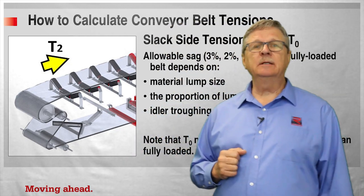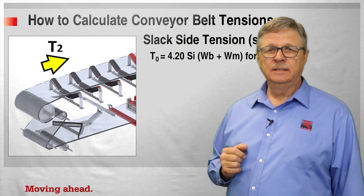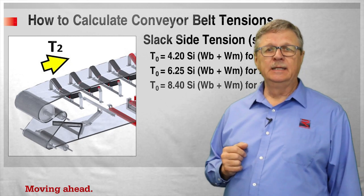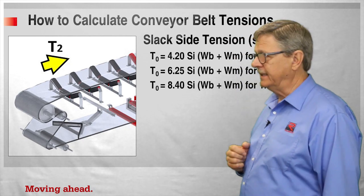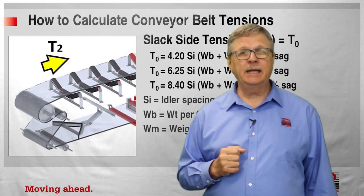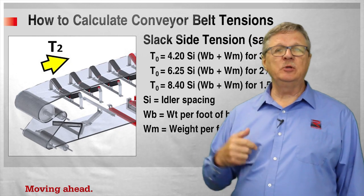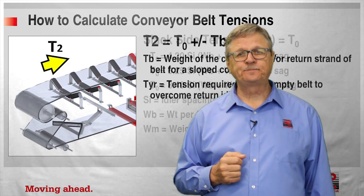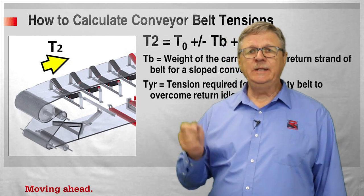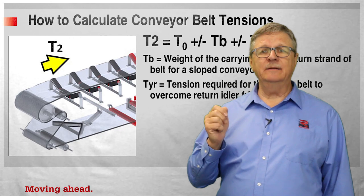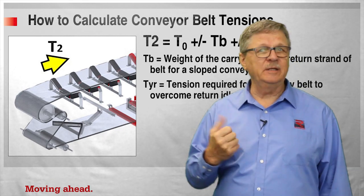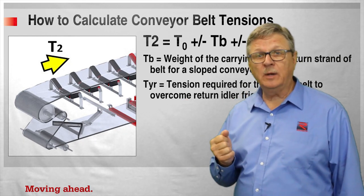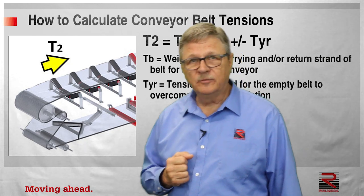The three pertinent equations shown are T0 for 3% sag, T0 for 2% sag, and T0 for 1.5% sag, in which SI is idler spacing in feet, WB is the weight per foot of the belt, and WM is the weight per foot of the material. Once we have T0, we need to add or subtract the weight of the carrying and/or return strand of the belt for a slope conveyor, and add or subtract TYR, the tension required for the empty belt to overcome idler friction.